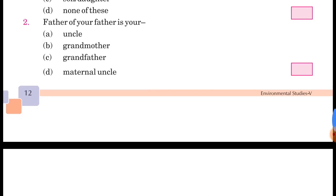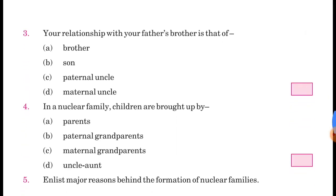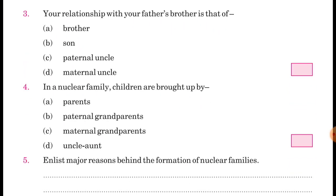Third question: Your relationship with your father's brother is that of — आपके father के जो brother हैं, उनके साथ आपका क्या relation है? A. Brother, B. Son, C. Paternal Uncle, D. Maternal Uncle। Father's brother पिता-पक्ष से हुए, so answer is C. Paternal Uncle।